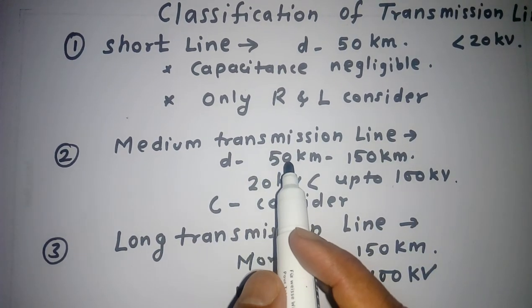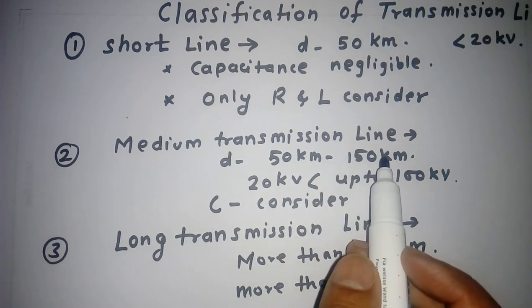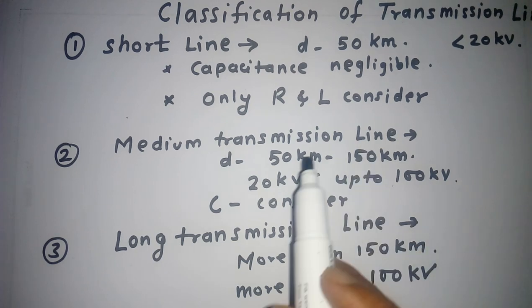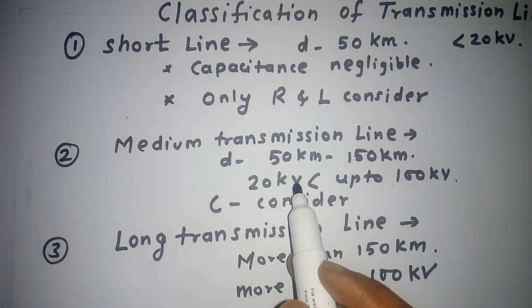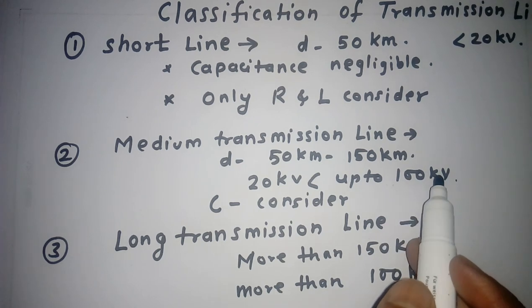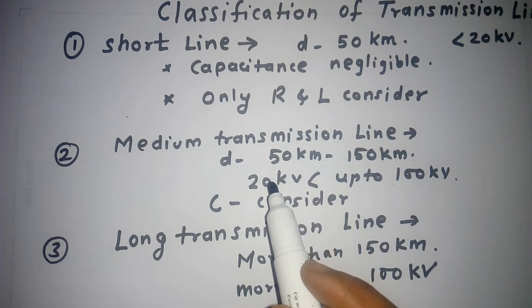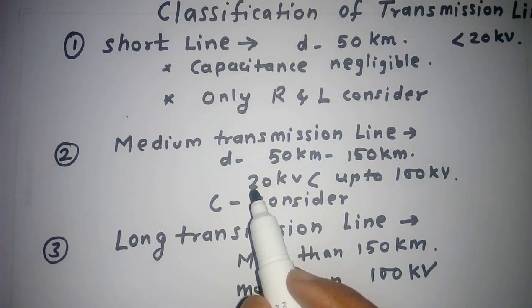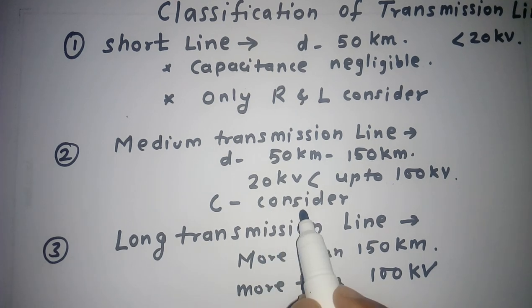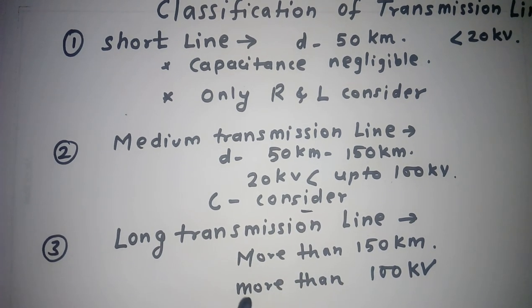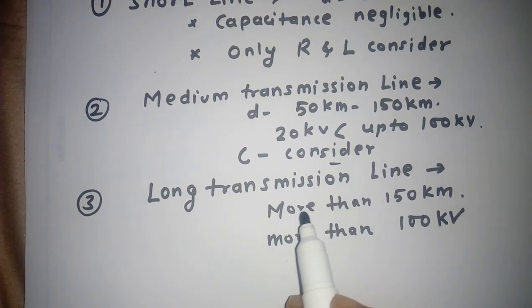The next category is the medium transmission line. Any line in the range of 50 kilometers to 150 kilometers is called a medium transmission line. The voltage level will be more than 20 kilovolts and up to 100 kilovolts. As the length increases, the capacitance effect is always considered.